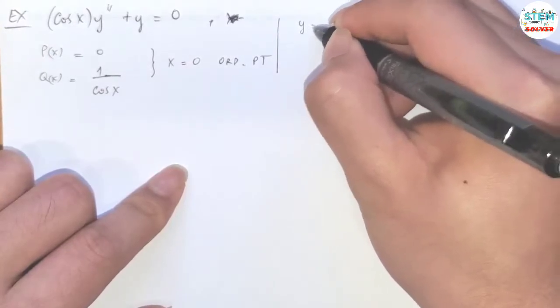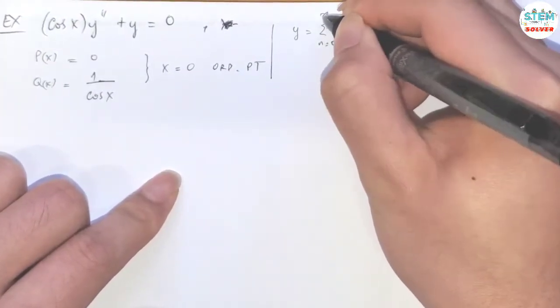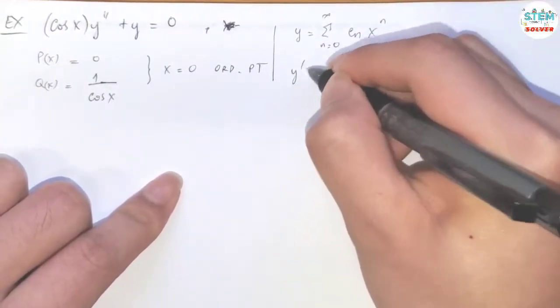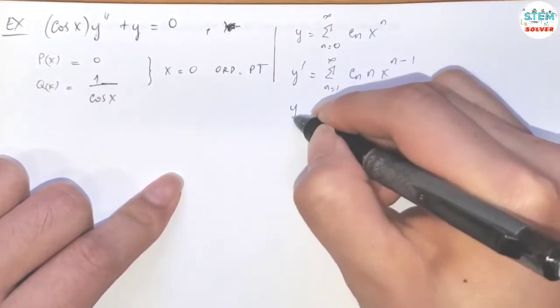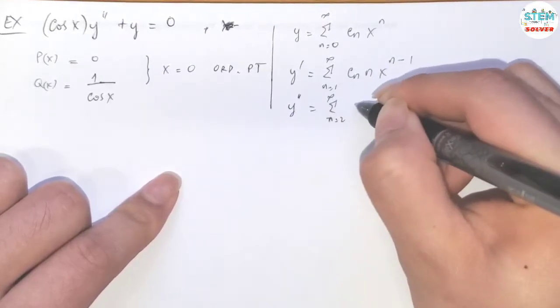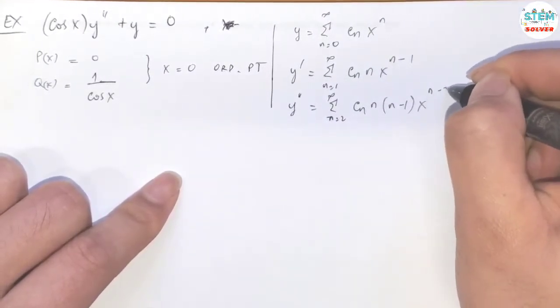Then our solution is given at this form: y equals power series from zero to infinity C_n x to the n. Take the first derivative using power series from one to infinity C_n n x to the n minus one. Take the second derivative using power series from two to infinity C_n n(n-1) x to the n minus two.